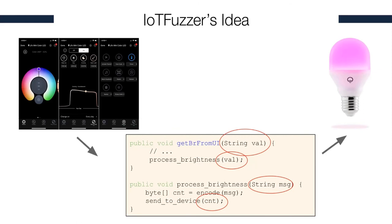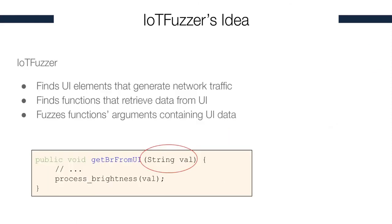Based on this observation, IoT Fuzzer finds UI elements that generate network traffic, and then it finds the functions that retrieve data from these UI elements. Finally, these identified functions will be fuzzed by modifying the arguments that these functions accept. We call this method UI-level fuzzing, where the fuzzing is driven by identifying methods that take data directly from the UI elements.